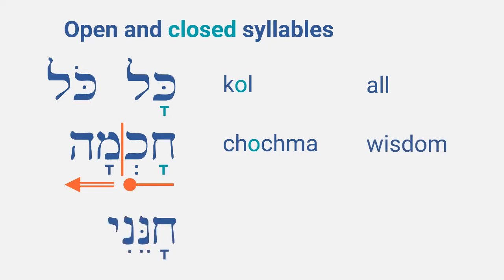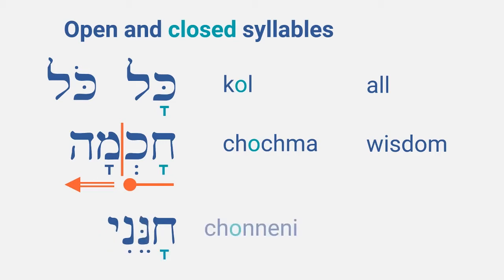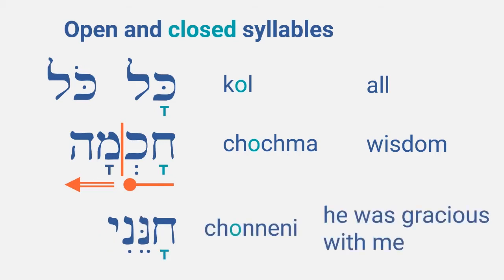Next is this one. This would normally be an open syllable and hence a normal Kametz. But there is a Dagesh Forte in the Nun. This means that the Nun is actually double and that there is a silent shwah under the first Nun. This actually makes the syllable closed, and hence we get a Kametz Gatuf: 'Chonenni,' meaning 'he was gracious with me.'